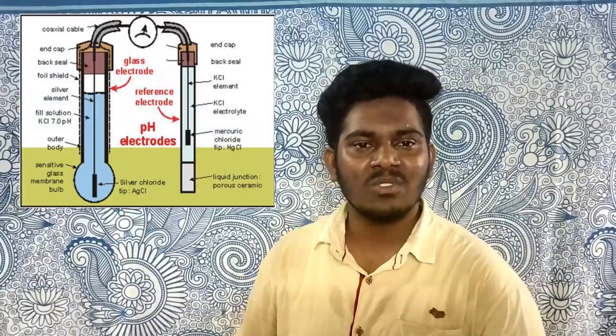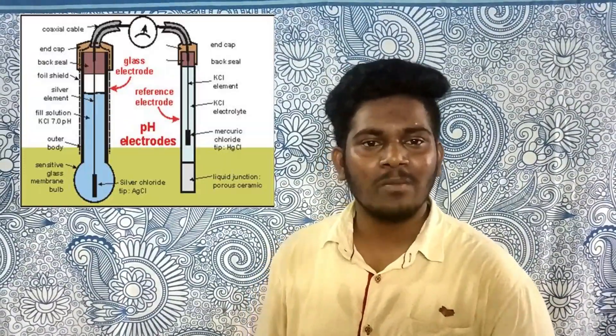The next hardware component is the Soil Moisture Sensor. Its main use is to sense the moisture present in the soil and provide a corresponding value. The next hardware component is the pH meter. pH stands for Potential Hydrogen. The main use of the pH meter in our project is to determine whether the soil is acidic or basic.